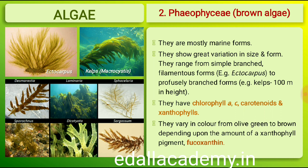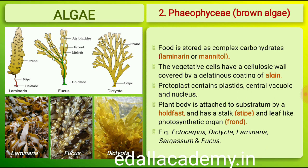The members of Phaeophyceae, or brown algae, are found primarily in marine habitats. They show great variation in size and form, ranging from simple branched filamentous forms to profusely branched forms as represented by kelps, which may reach a height of 100 meters. They possess chlorophyll-a, chlorophyll-c, carotenoids and xanthophylls. They vary in color from olive green to various shades of brown depending upon the amount of the xanthophyll pigment.